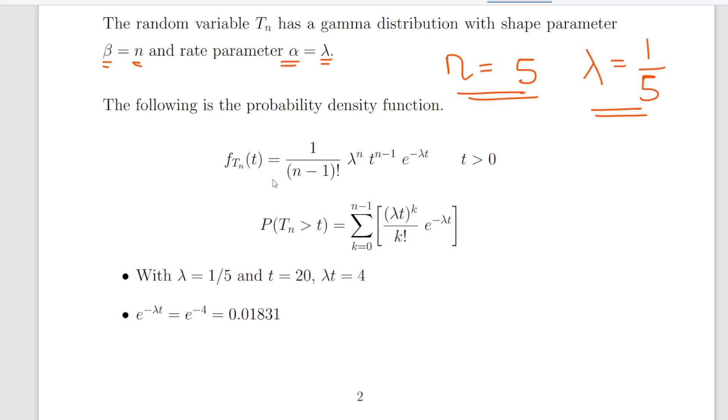So the key thing here is we're dealing with a 20 year lifespan, so t equals 20 and lambda t is going to be equal to 4.